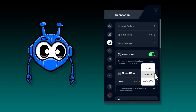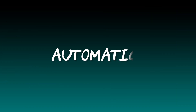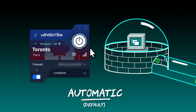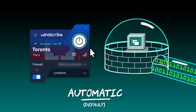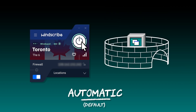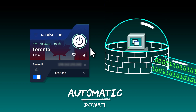The Windscribe firewall has three different modes which can be found by opening the preferences menu, then the connection submenu, and flipping through the firewall modes there. The first and default mode is automatic. In this mode, the firewall will mimic the state of the VPN connection — if you turn on the VPN, the firewall turns on with it, and when you turn the VPN off, the firewall follows. This is the out-of-the-way mode and will only activate when you're using Windscribe, and won't cause issues when you don't need it.